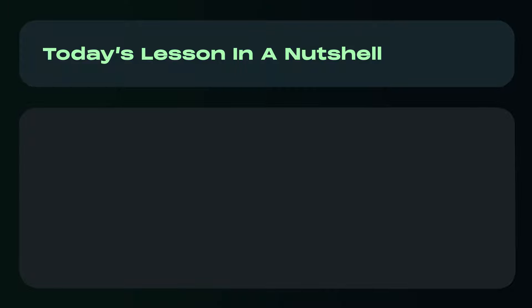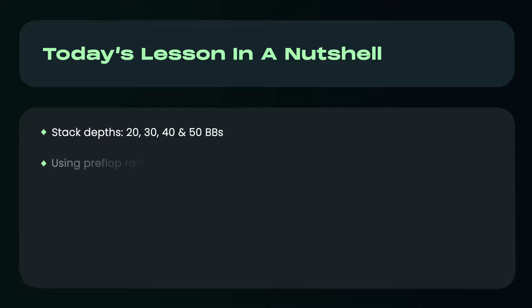Today's lesson in a nutshell. I'm going to be looking at stack depths of 20, 30, 40, and 50 big blinds. I wanted to include shallower spots as well, but once you get to 15 big blinds and below, there just isn't that much RFI from most positions, as the range tends to just split into limps or jams, at least for later positions. I'll use the preflop ranges that do not include limps to keep the data as clean as possible and without interference from certain combos missing. I think this is just a cleaner and better way to run experiments like this.